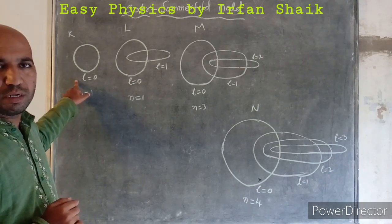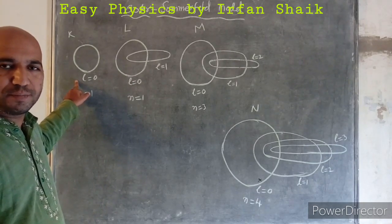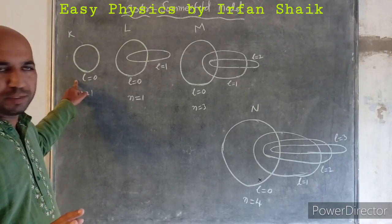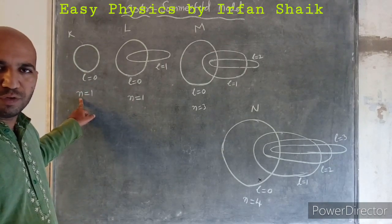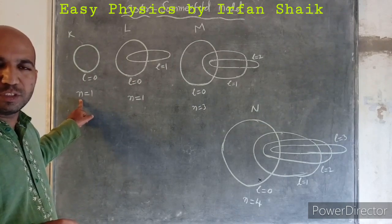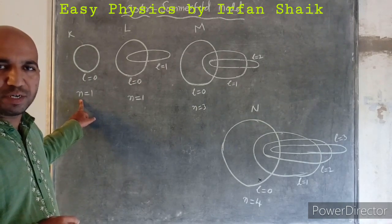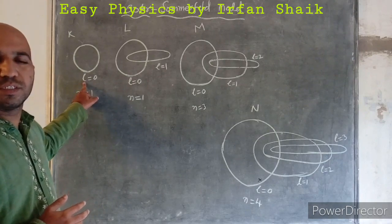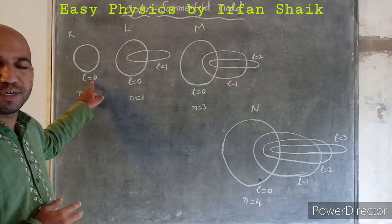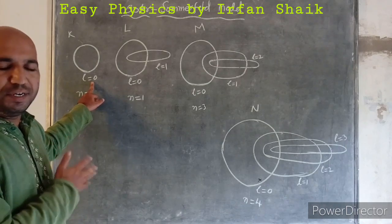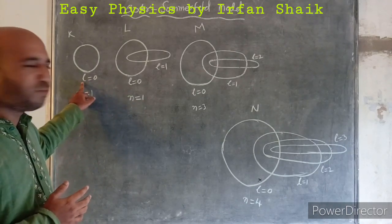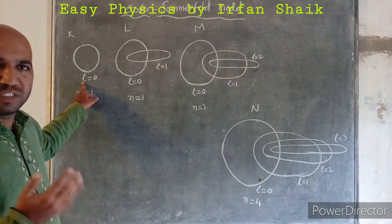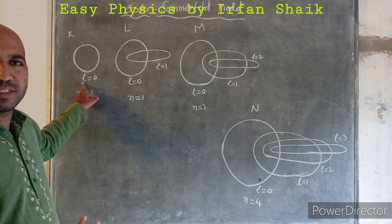Let us take each shell of Bohr. For the first shell, the K shell (n=1), Sommerfeld has not added any elliptical orbit, so the value of l is 0. Here, small n denotes the principal quantum number — we will discuss this in detail in the next class. The value of small l is 0, and small l is called the angular momentum quantum number.